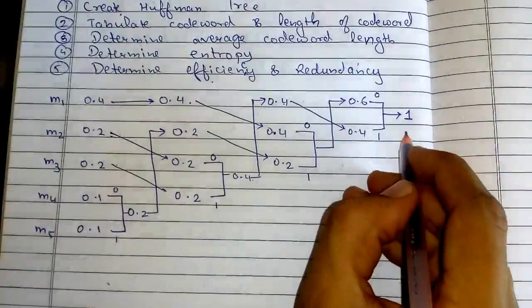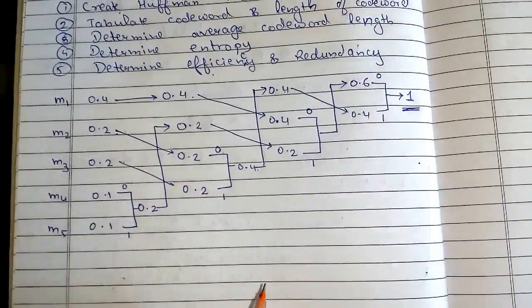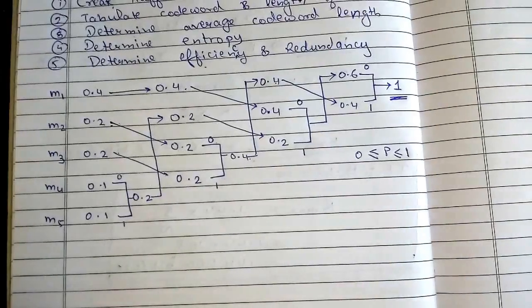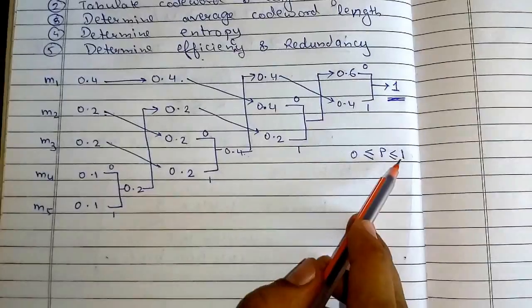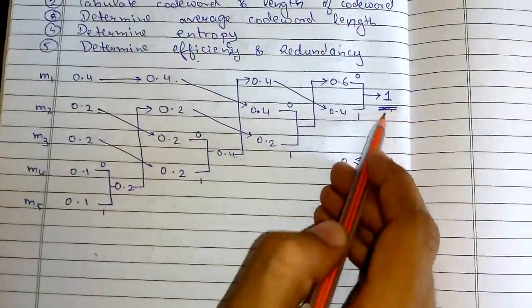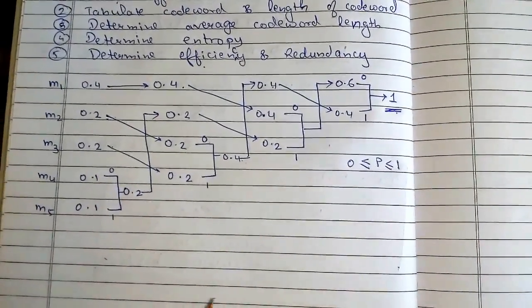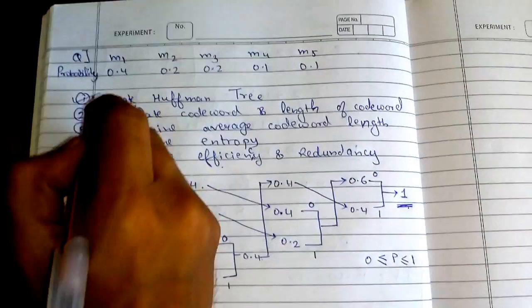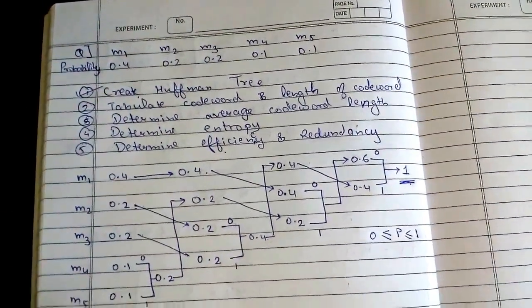Finally adding the last two gives 1. Always remember your final answer should be 1, because these are probabilities and the sum of all probabilities must equal 1. If you get less than 1 or greater than 1, you have made a mistake. We have completed the first step of creating the Huffman tree. Now let's tabulate the codeword and length of codeword.